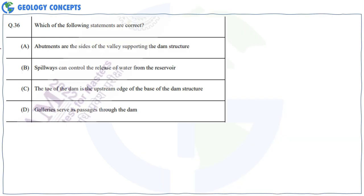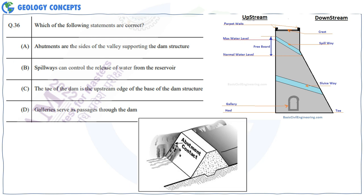Question 35: Which of the following statements are correct? The first option says abutments are the sides of the valley supporting the dam structure — looking at the figure, these are the abutment contacts where the valley supports the dam, so this is correct. Next, spillways can control the release of water from the reservoir. As seen in this diagram, this is the spillway, and if the water level rises above the maximum level, the spillway allows water to flow out.